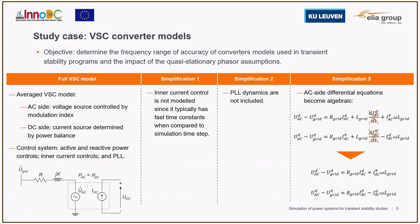Here we show an example analyzing the accuracy of VSC models using transient stability programs and the impact of simplifying assumptions. The VSC model used was an average model, and the control loops included were the active and reactive power controls, the inner current control, and the PLL. From this model, it was possible to identify three simplifications typically adopted in transient stability programs.